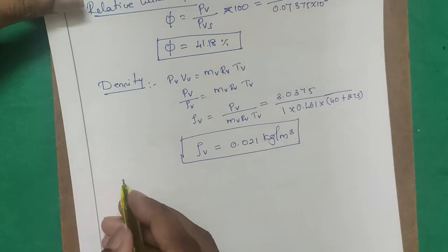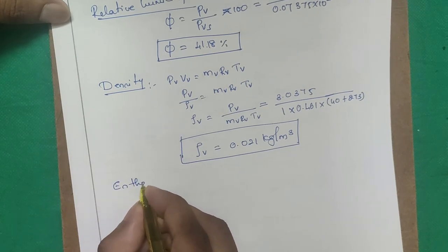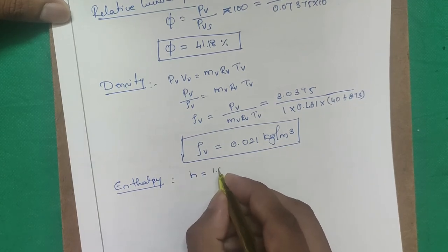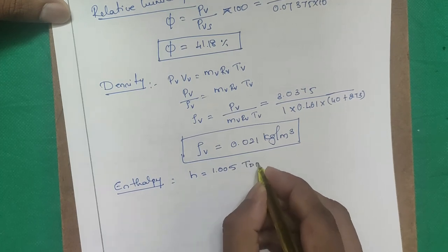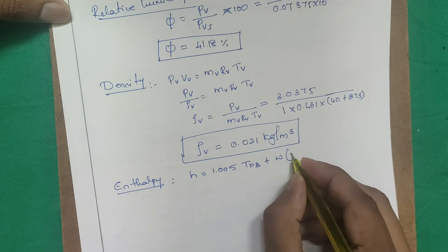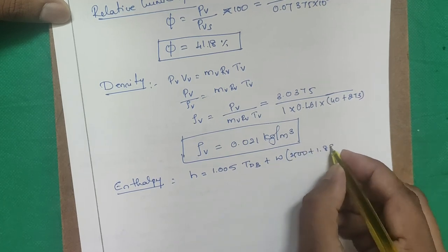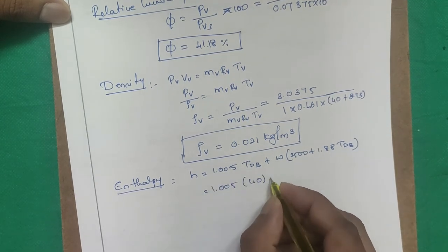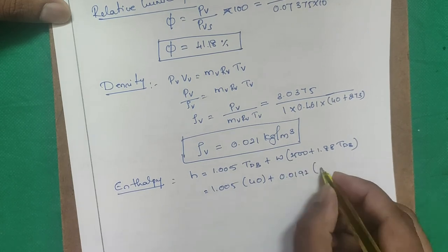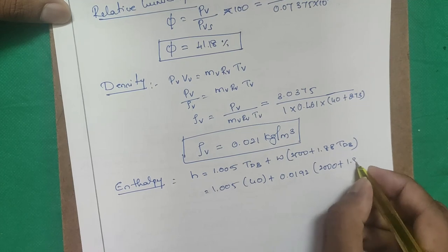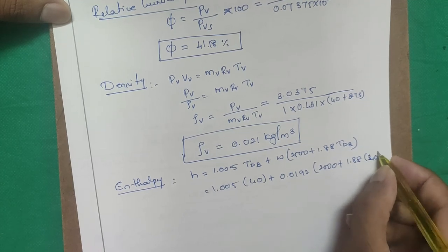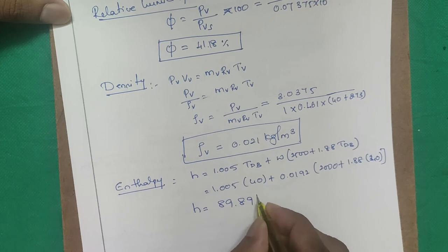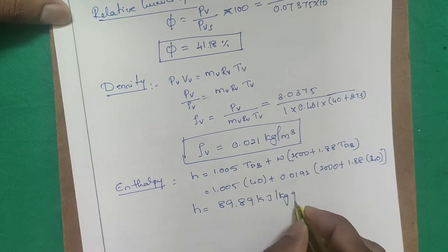Step 6 — Enthalpy: h = 1.005 × Tdb + W × (2500 + 1.88 × Tdb) = 1.005 × 40 + 0.0192 × (2500 + 1.88 × 40) = 89.89 kJ/kg of air.